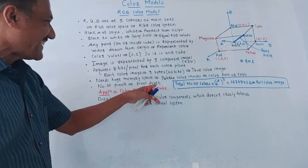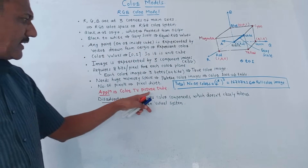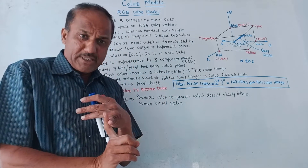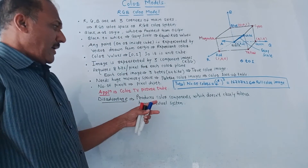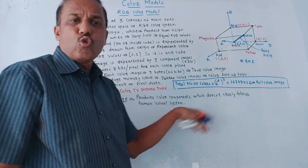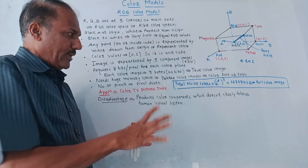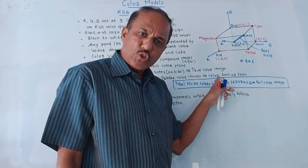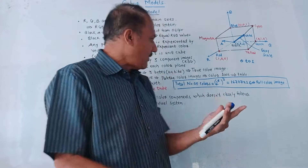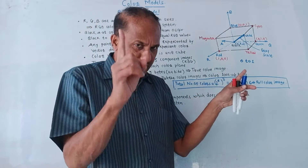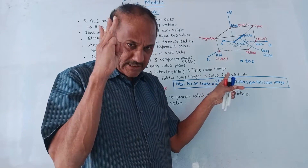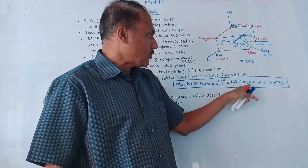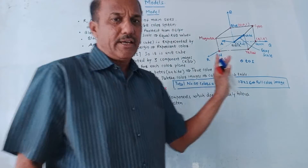The number of bits used to represent a particular color is called pixel depth. An application of the RGB model is that it is used in color TV picture tubes. The limitation is that it requires huge memory space because we need 24 bits or 3 bytes to represent a particular pixel. Another disadvantage is that it produces color components which don't closely follow the human visual system. The total number of colors available is 2 raised to 8 raised to 3, which equals 16,777,216 — and using such a color image is called a full color image.